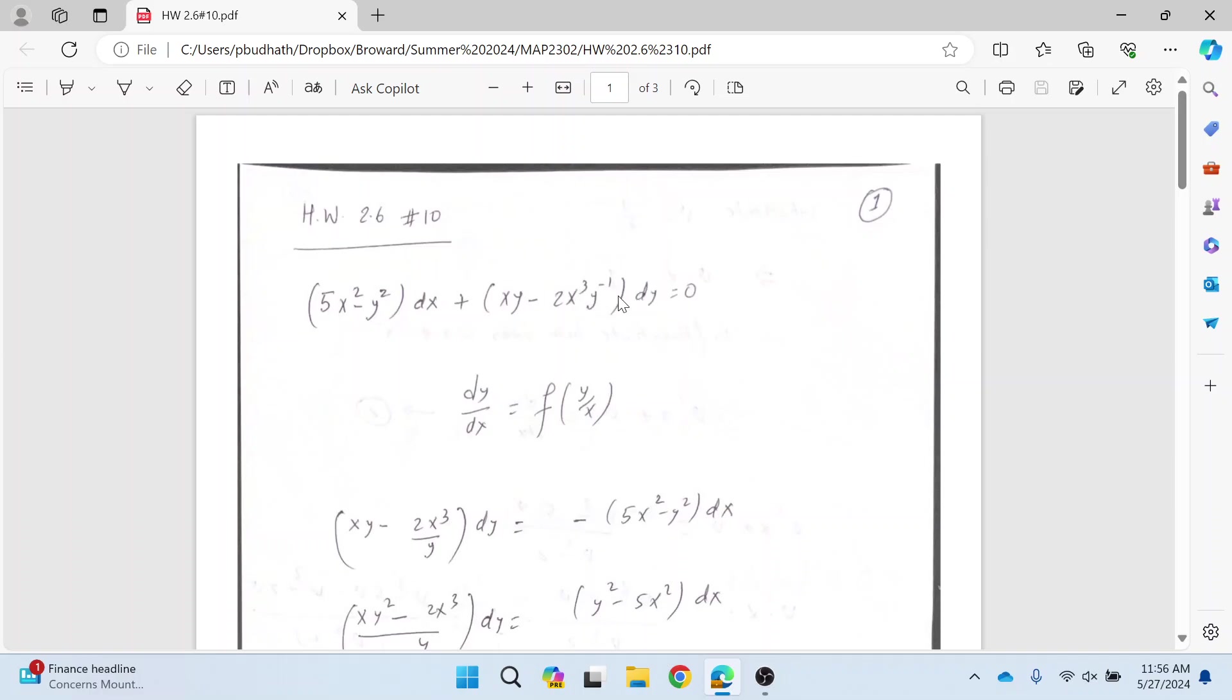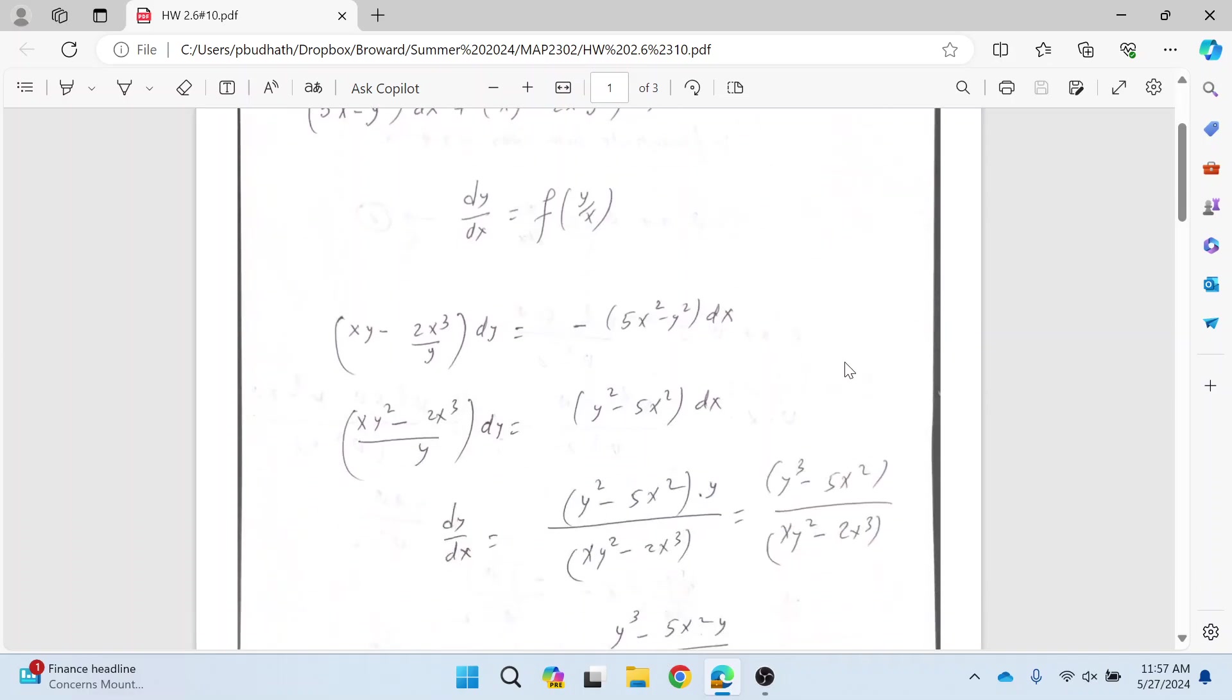So for that, bring this dy on the left side. As you can see here, this y has a power negative 1, so I just wrote it like 2x cube over y and I bring this thing to the other side. And after that, I make y on the denominator both sides, so that gives me y square for the first term here, and on the right side, because of this negative sign, I'm just changing the sign inside the parenthesis.